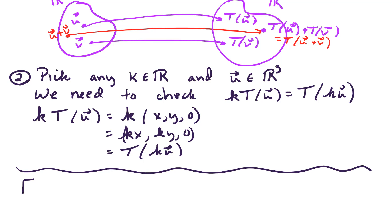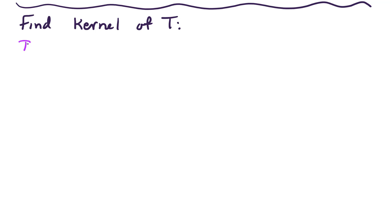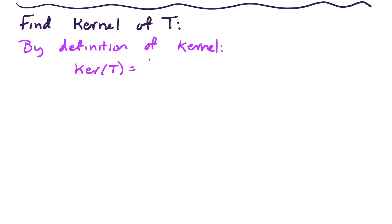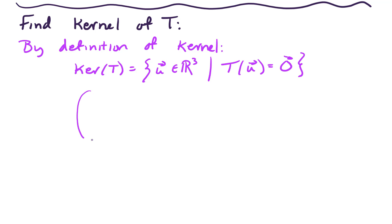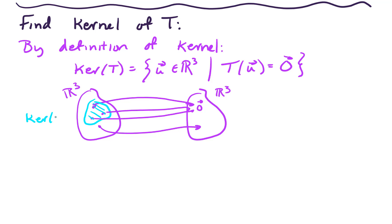The next thing is to find the kernel of T. By definition, the kernel of T is the set of vectors u in R3 such that T of u equals the zero vector. Here's our picture: we're mapping from R3 to R3, and there's a bunch of vectors in the domain. Some of them map to zero, some map to other things. The set of vectors that maps to zero is what we mean by the kernel of T.